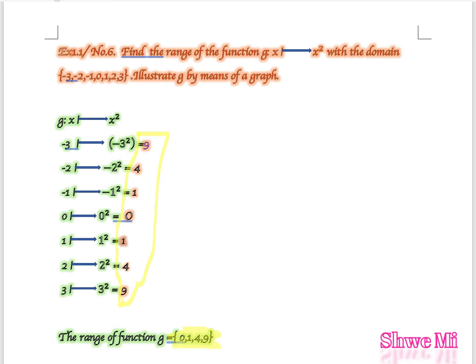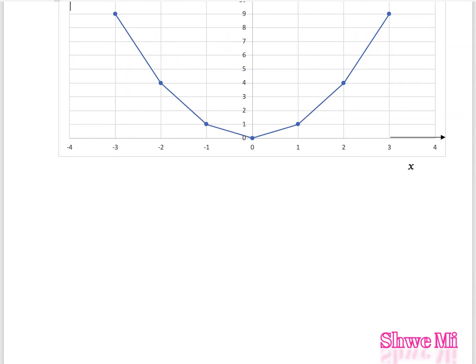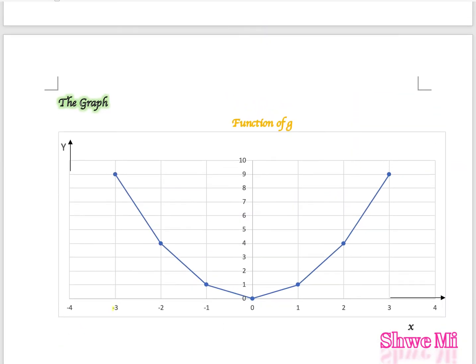We will illustrate G by means of the graph. The function is x goes to x squared. So: (-3)² = 9, (-2)² = 4, (-1)² = 1, 0² = 0, 1² = 1, 2² = 4, 3² = 9. We plot these points on the graph.